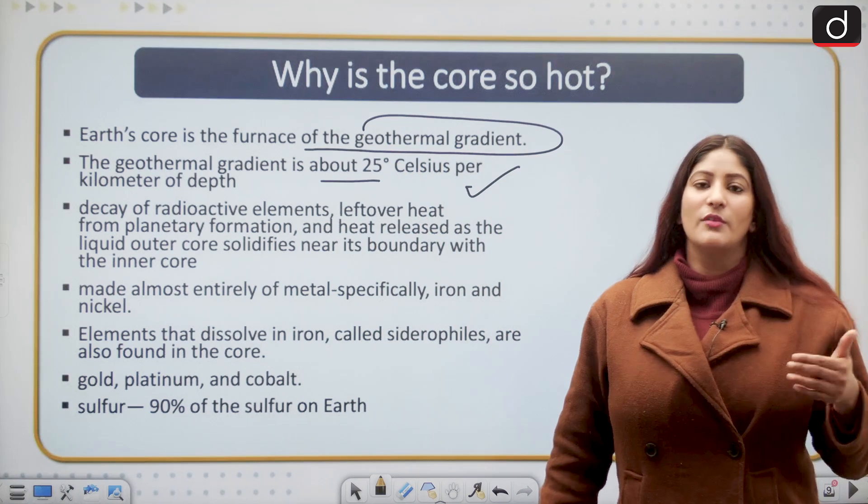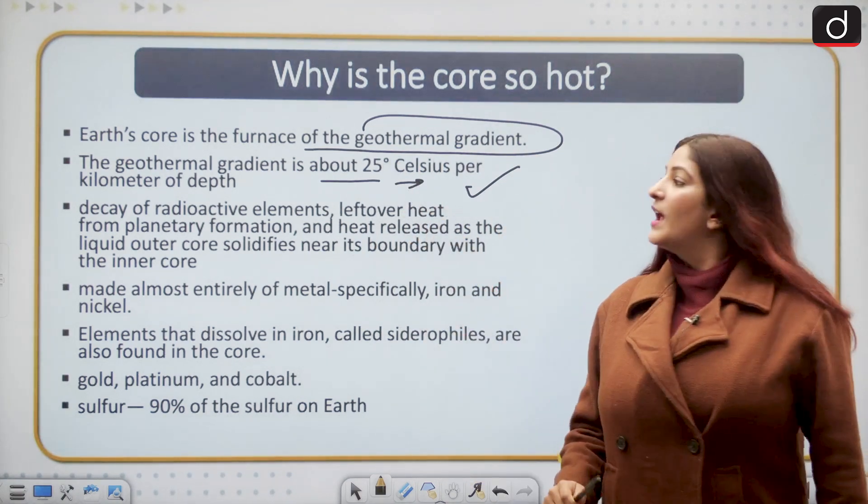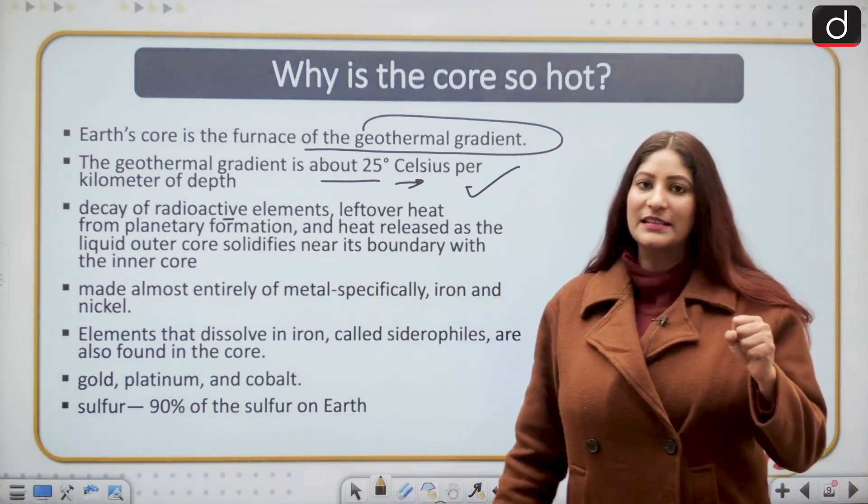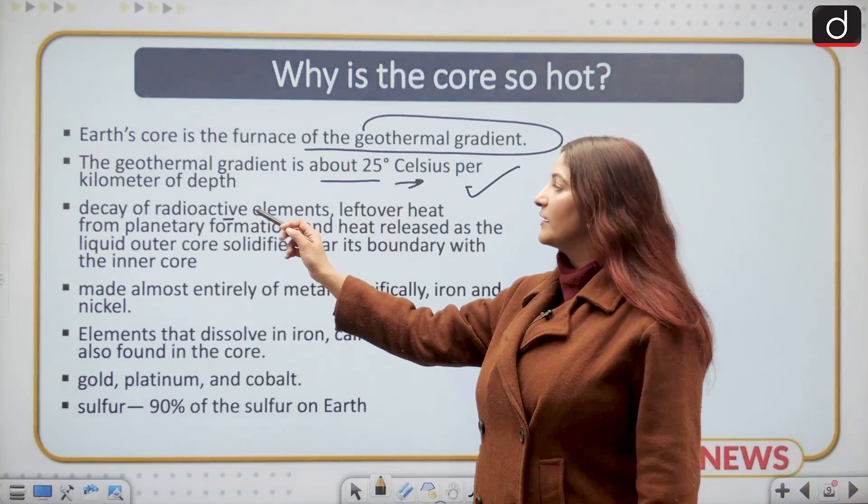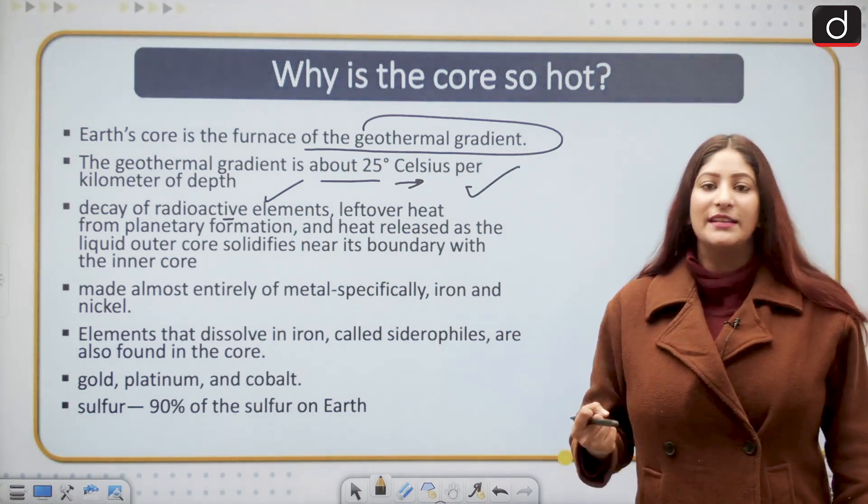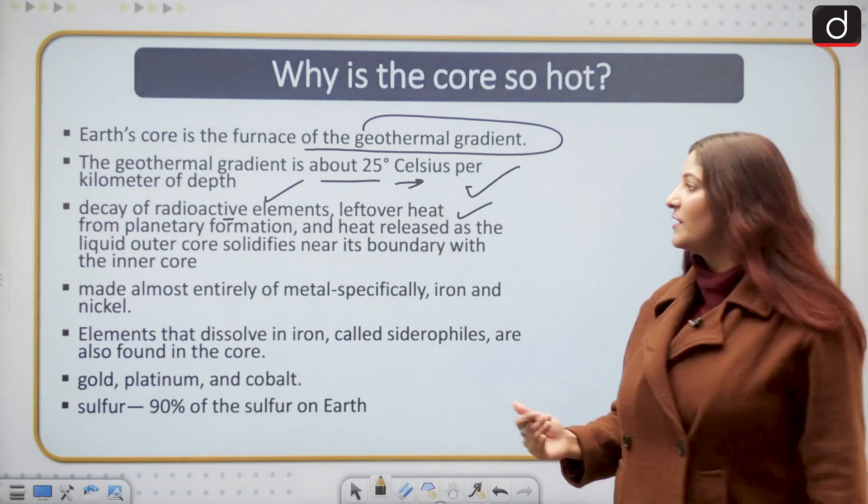As we go down below there is an increase of 25 degrees Celsius per kilometer. When we talk about the heat trapped in the core, there are other factors such as radioactive elements decaying and emanating heat. There is also the leftover heat from planetary evolution or planetary differentiation.